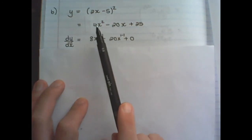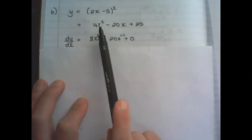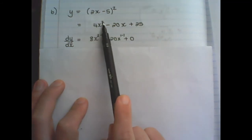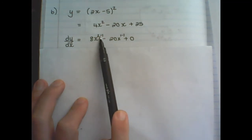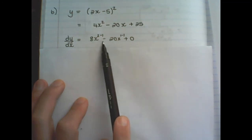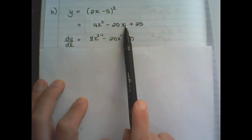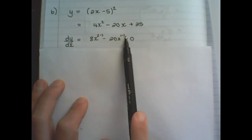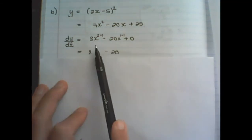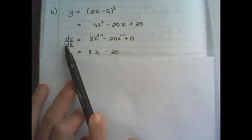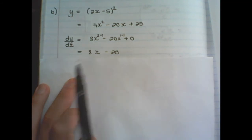I apply the rule to every term individually. So it is 4 times 2, which becomes 8x to the power of 2 minus 1, minus 20 times 1, plus 0 because there are no variables. The derivative simplified is 8x minus 20.